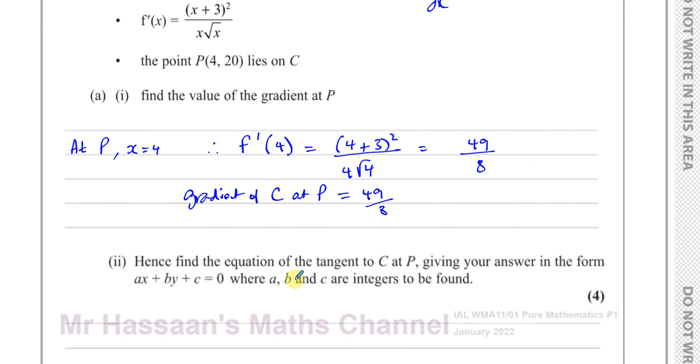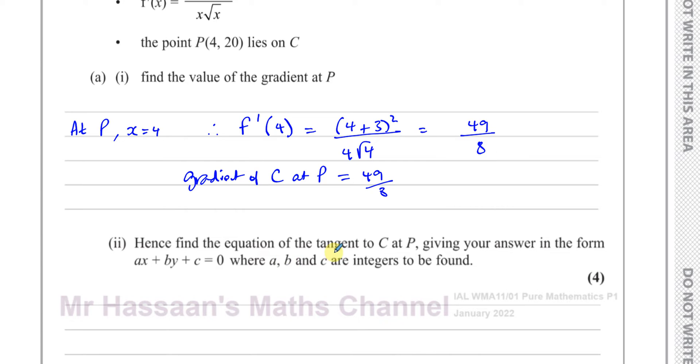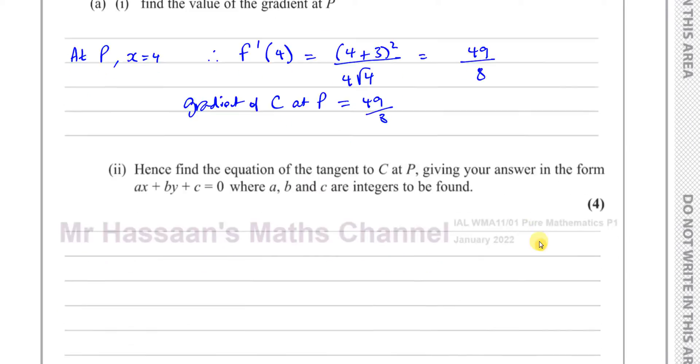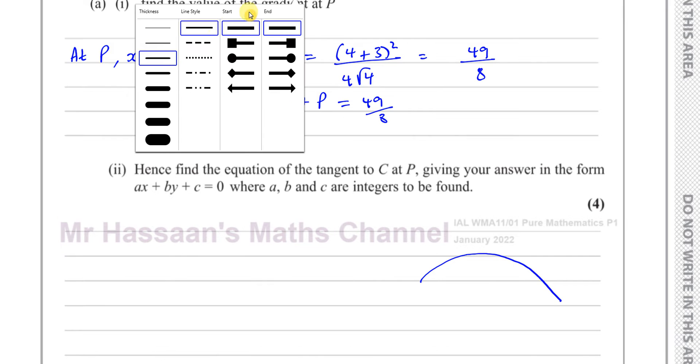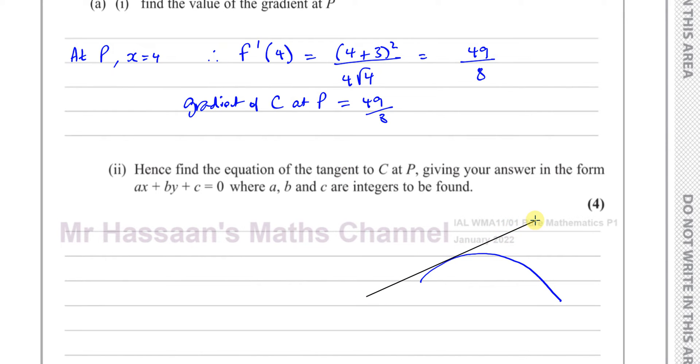Now part 2 says, hence find the equation of the tangent. Hence, meaning using what we just found, find the equation of the tangent to C at P, giving your answer in the form ax plus by plus c equals 0. The tangent is a line which just touches the curve at a certain point without passing through it. So it has the same gradient of the curve at that point.